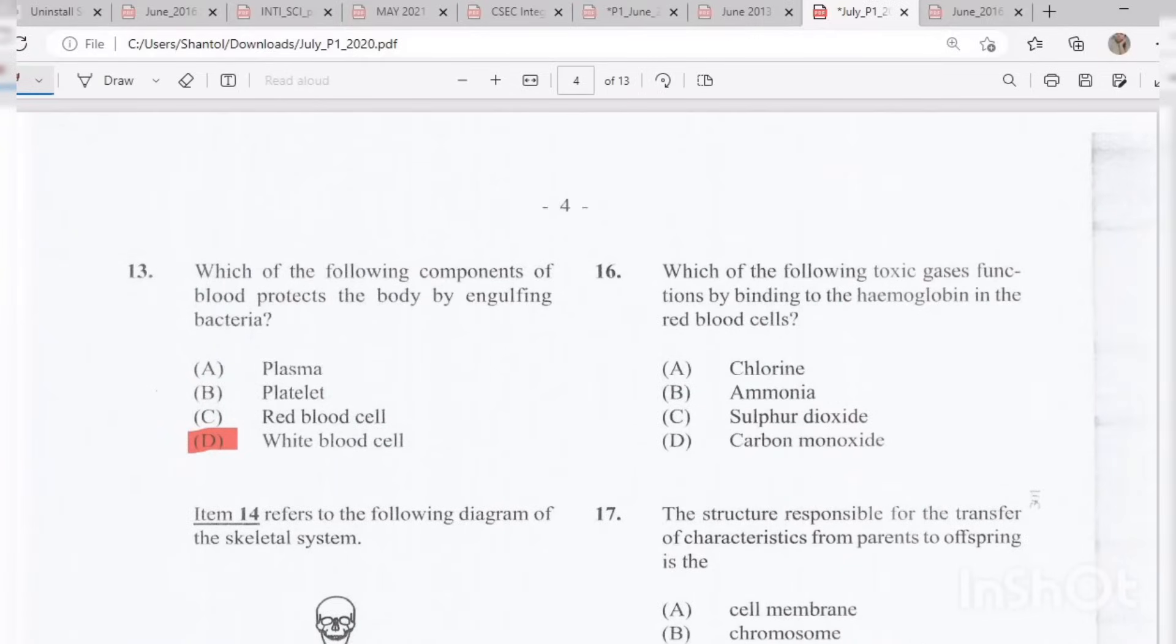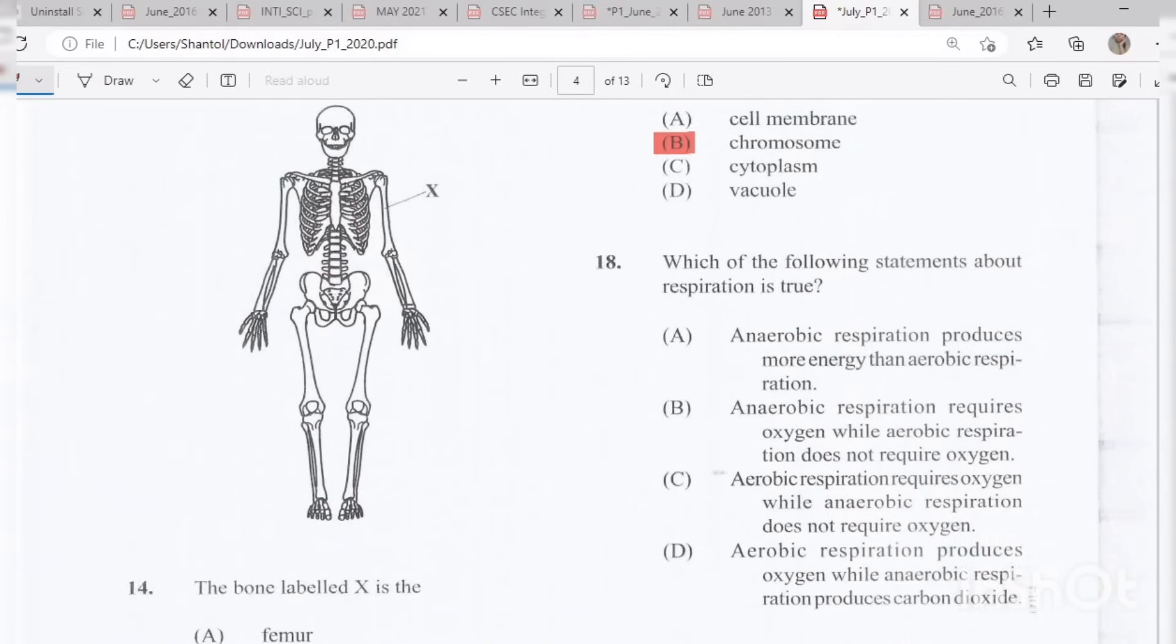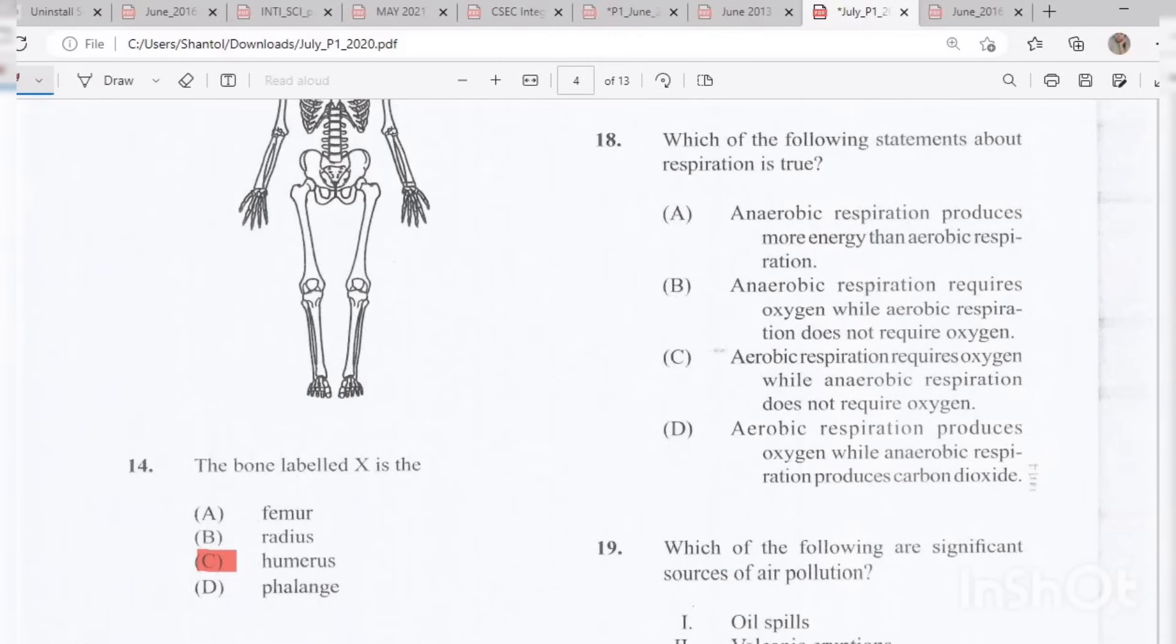Number 16: Which of the following toxic gases functions by binding to the hemoglobin in the red blood cells? The answer would be D, carbon monoxide. Number 17: The structure responsible for the transfer of characteristics from parents to offspring is B, chromosome. Number 18: Which of the following statements about respiration is true? The answer is C, aerobic respiration requires oxygen while anaerobic respiration does not require oxygen.